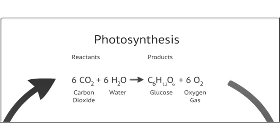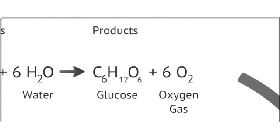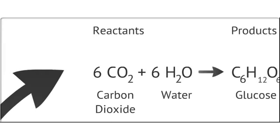When we look at the equation for photosynthesis, we see that the product, glucose, has six carbon atoms in it. That means that we need to have six carbon atoms added in the reactants. That is why we see six CO2 in the reactants, because there is one atom of carbon in each of those molecules.